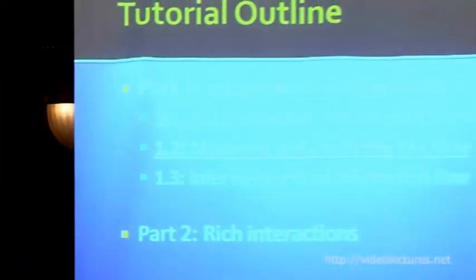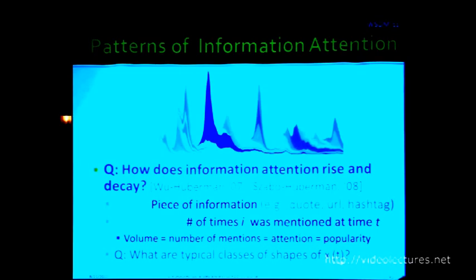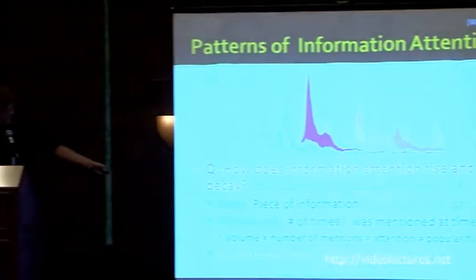This finishes the first part on tracing the flow. Now I'll move on to what useful things we can do with this — getting more algorithmic and into applications. The first thing is understanding how information attention arises and decays over time, discovering what types of shapes popularity curves of online information have. An 'item' refers to a particular piece of information — a quote, a hashtag on Twitter, etc. — and 'volume' is the number of mentions of that item over time, giving a natural time series.